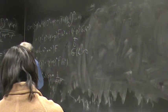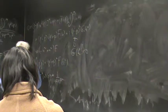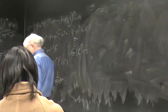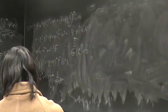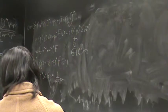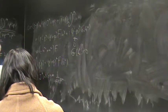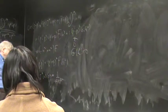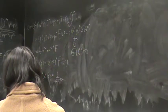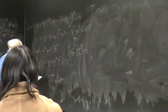Putting all the factors together, the matrix element of j mu of zero is q over (2π)³ times (p prime plus p)_mu f(k²). Looking at the zero component, j zero gives q times 2p zero. We have a delta function normalization in the states, so when we factor out the common delta function from both sides, we no longer have a delta function in the final expression. Comparing with the general result, we get f(0) equals one.